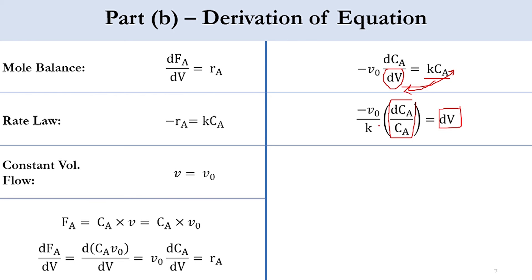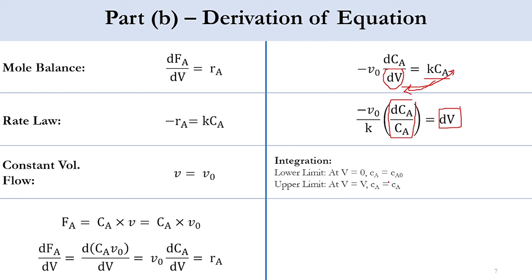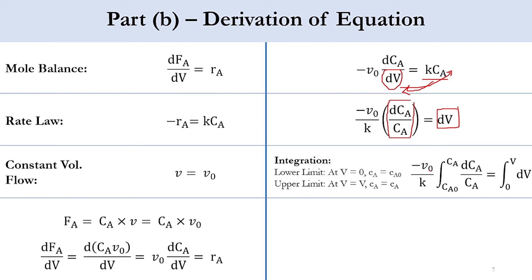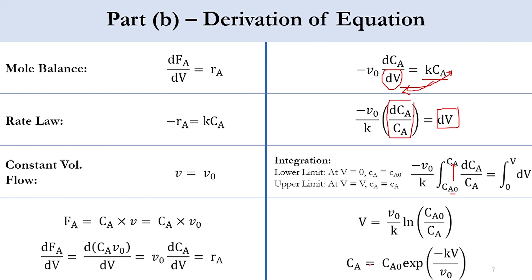Integrating with limits — at V = 0, CA = CA0; at V = V, CA = CA — we get: −(V0/k)·∫(CA0 to CA) dCA/CA = ∫0 to V dV. This gives V = (V0/k)·ln(CA0/CA). Alternatively, we can write CA = CA0·exp(−kV/V0) if the equation is needed in terms of the final concentration.